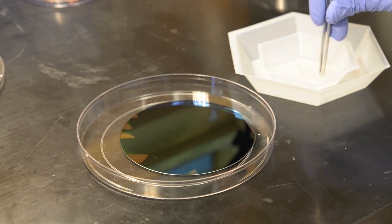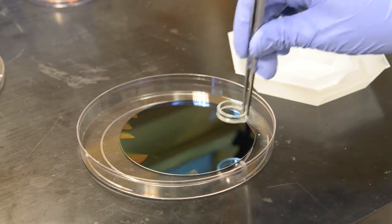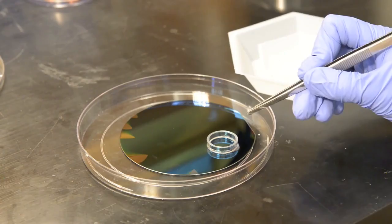Dip a plastic ring into the degassed PDMS to just wet the bottom and apply it with proper positioning onto the silicon master pattern.